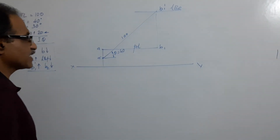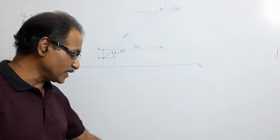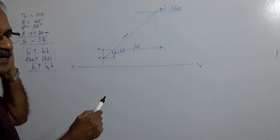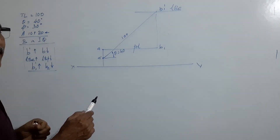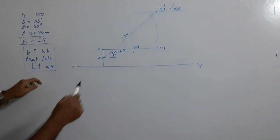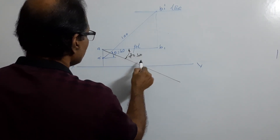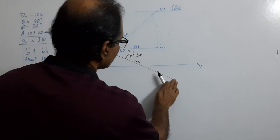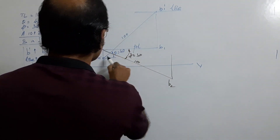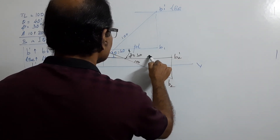Always erase unnecessary lines that may sometimes cause confusion. Then draw from A, the line Ab2 with phi = 30°, drawing it downwards because it should come below XY. Phi equals 30°, length 100mm — place b2.